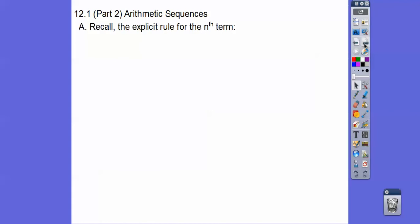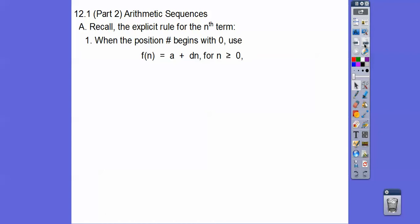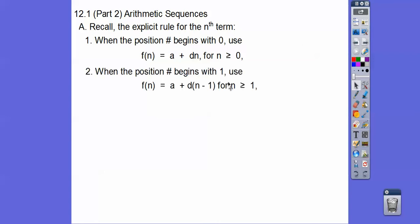All right, so here's our explicit rule. When it starts at zero, it's going to be the first term plus D times N, where D is our common difference, for N greater than or equal to zero. When it starts at one, then it's A plus D times (N minus one), for N greater than or equal to one.